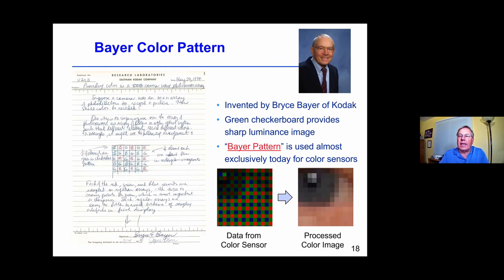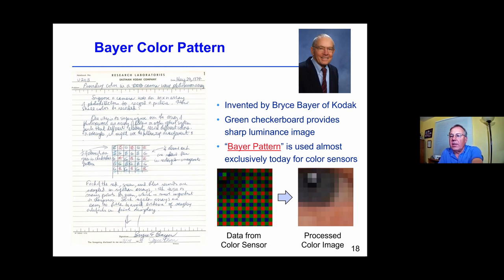The pattern used is almost always what's called the Bayer pattern, named after Bryce Bayer. A page from his notebook shows a pattern with a green checkerboard and lines of red and blue pixels. This is used almost exclusively today on color sensors — almost every smartphone uses this. The raw data from the color sensor contains the individual red, green, and blue values; processing then creates a full color image with red, green, and blue values everywhere.